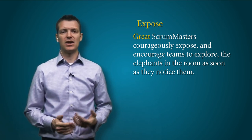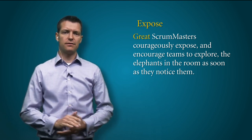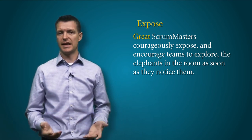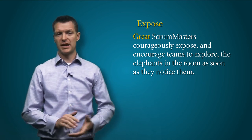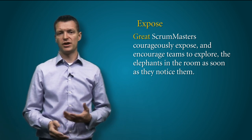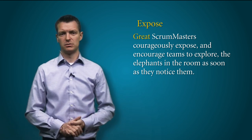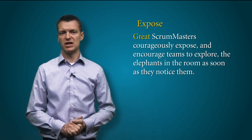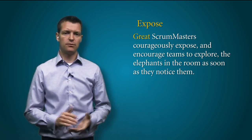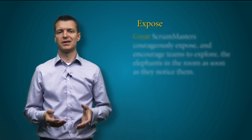For example, the elephant in the room could be that one of the team members is getting into the office later and later. The team may accommodate this person by shifting the daily scrum and sometimes writing up their conversations. But these coping mechanisms are just leading to inefficient teamwork, and perhaps resentment growing in the team. Before this spirals into outright anger and rebellion, the team should confront and solve the problem.